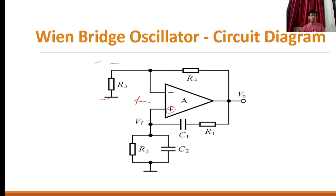Since we did not apply an external signal, we can assume the input signal is off. At the output, we will get the same signal with 0 degree phase shift. I applied V-out and connected it to the RC network — one in a series combination of RC and one in a parallel combination. That arrangement makes the Wien bridge oscillator.